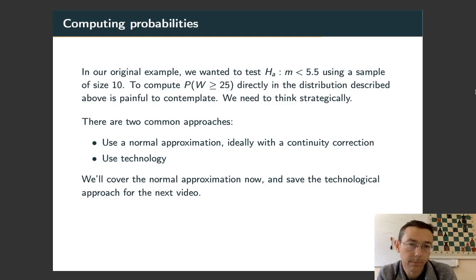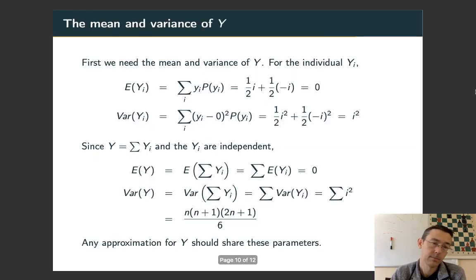There's really two things that we can do. First of all, we can notice that this distribution, that the distribution of Y and therefore of W is going to have approximately a normal distribution. We can compute probabilities that way. The second thing we can do is to do it directly using technology. In this video, we'll do the normal approximation. We'll save the technological approach for the next video. Okay, so there's really three elements here if we are trying to use a normal approximation. First of all, we need to show that Y actually is going to have a normal distribution. That proof is going to be beyond what we can do in this course right now. Also, we're then going to need to know the parameters for that normal distribution and that we can and should calculate.